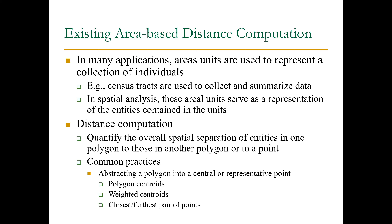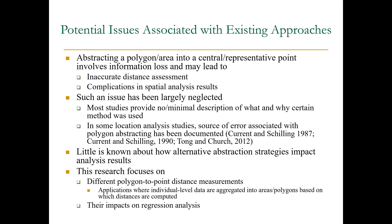A very common practice has been to abstract the polygon — that particular census tract — into a central location like a centroid or a representative point of that area. The representative point could be a polygon centroid or a weighted version. Sometimes we consider the population distribution in that area unit to get a weighted centroid. In some special cases, distance is calculated between the closest points of pairs.